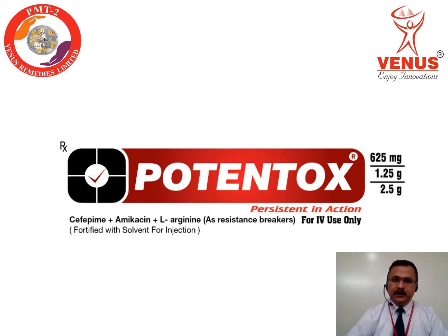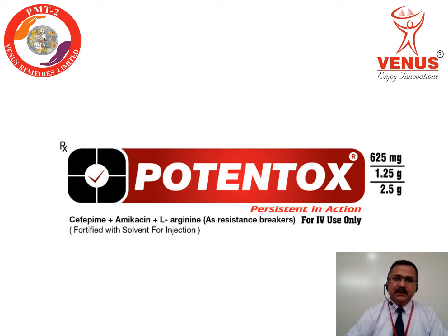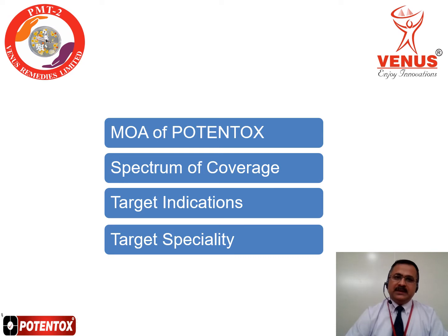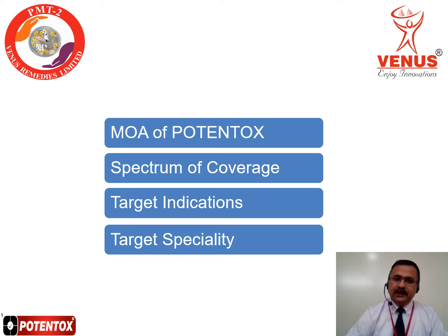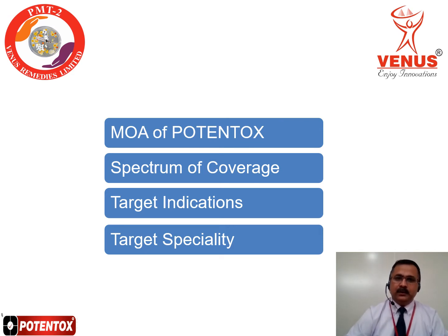Hello friends, welcome to the channel of PMT2. Today we are going to discuss the second part of Potent Talks. Potent Talks is a brand of cefepime and amikacin along with L-arginine as a resistance breaker, available in three pack sizes: 625 milligram, 1.25 gram, and 2.5 gram. Today we will discuss the mechanism of action of Potent Talks, its spectrum of coverage, target indications, and target specialty to whom we are going to promote Potent Talks.